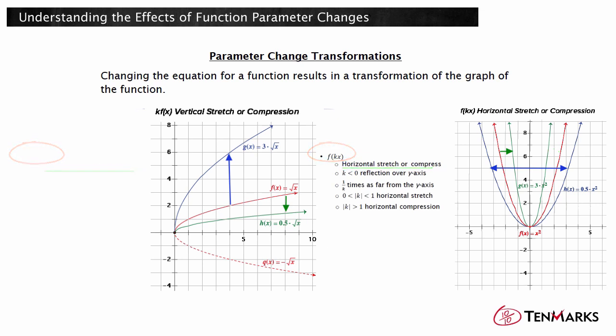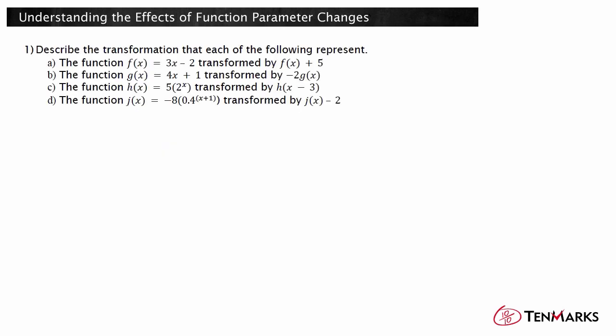Let's look at some examples. Describe the transformation that each of the following represent. The function f of x equals 3x minus 2, transformed by f of x plus 5. In f of x plus 5, the 5 is being added to the function value f of x. So this is a vertical shift. K is positive, so the graph is shifted 5 units upward.